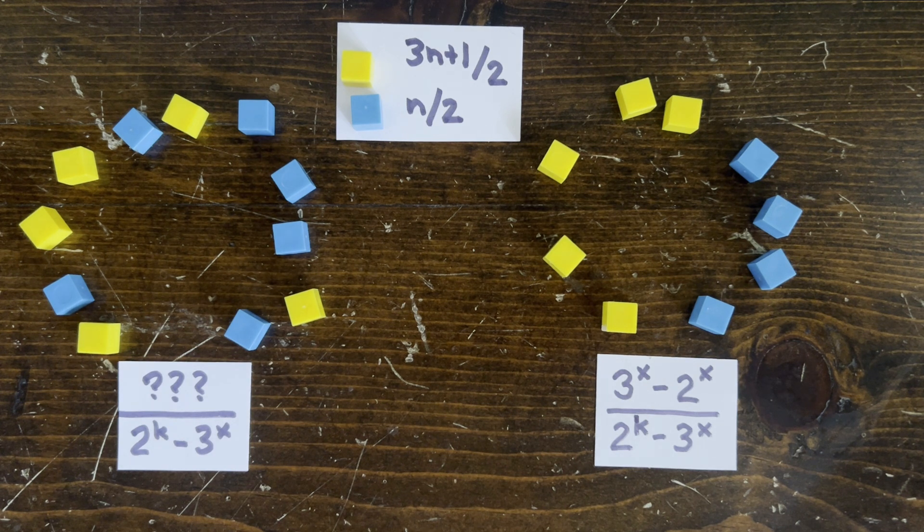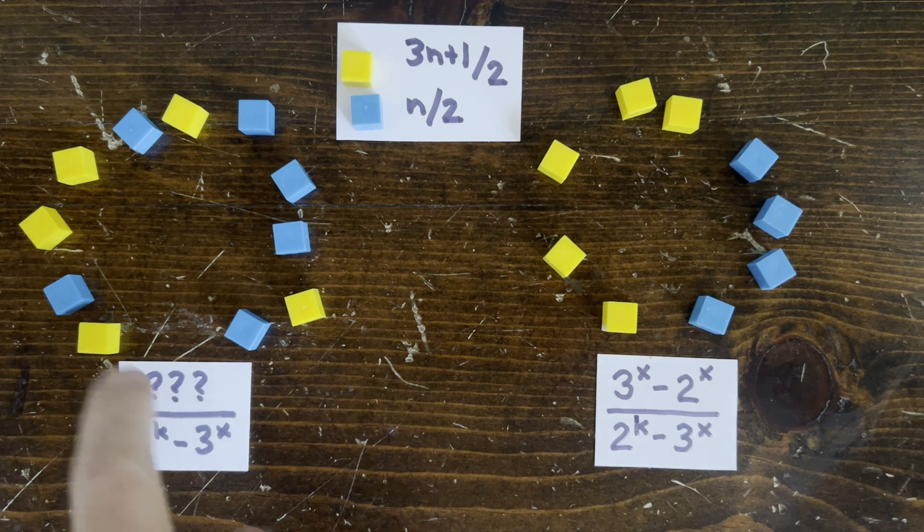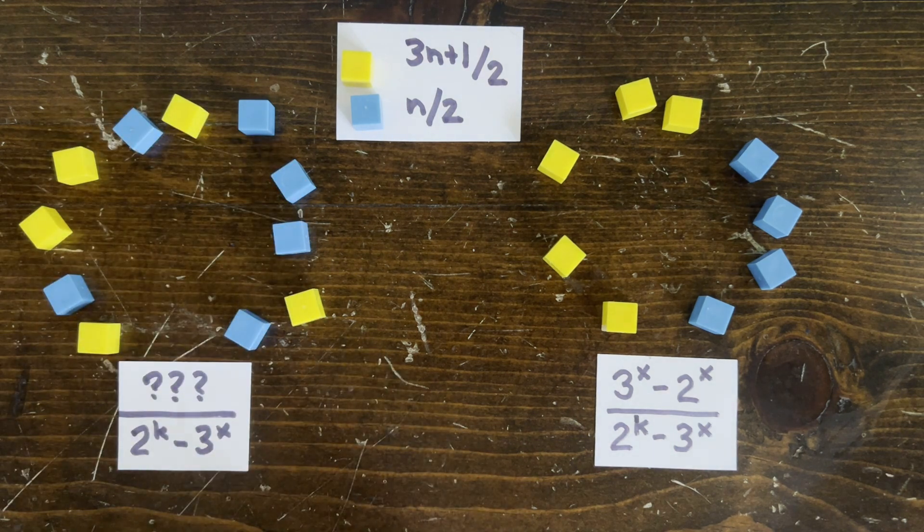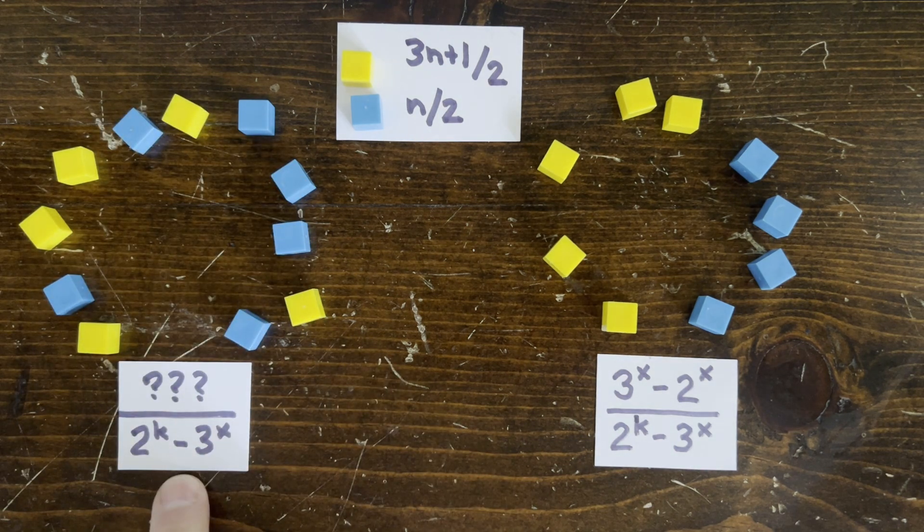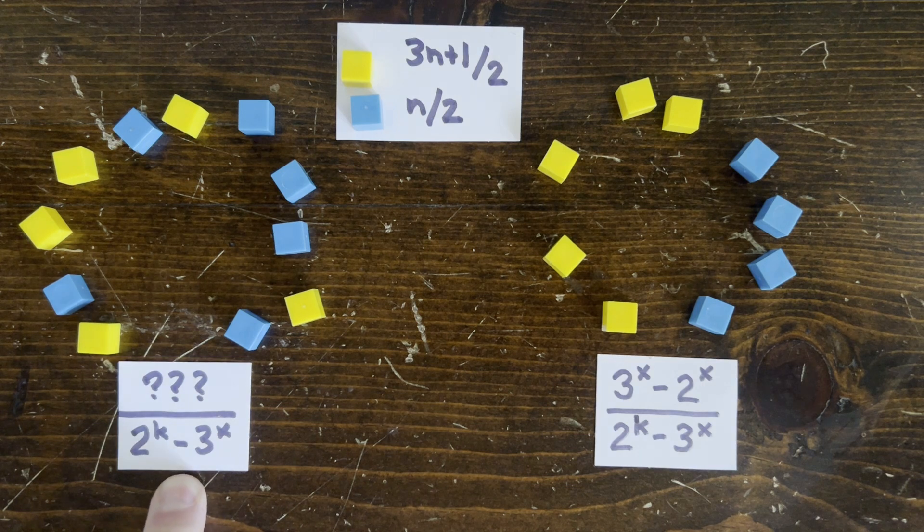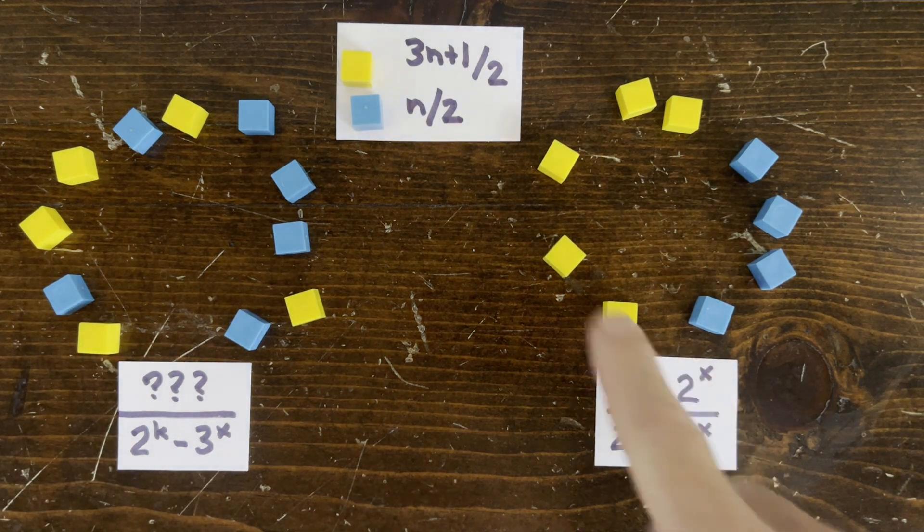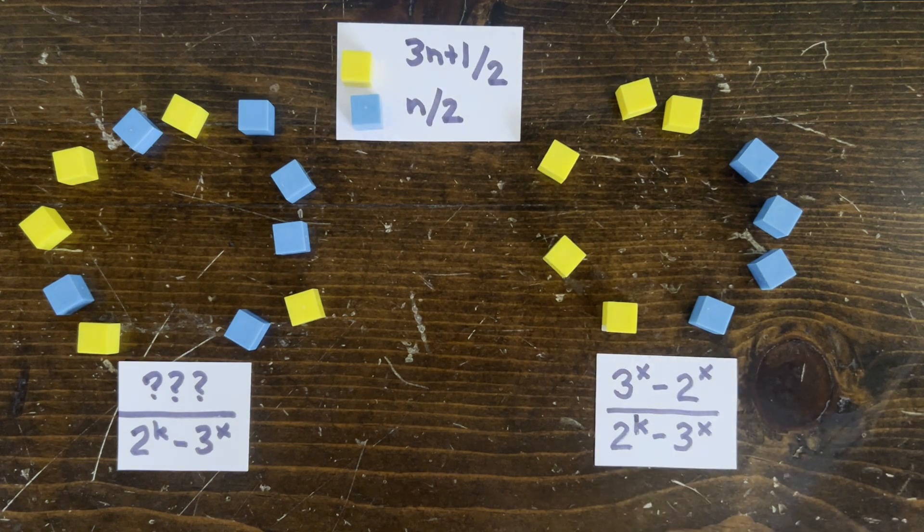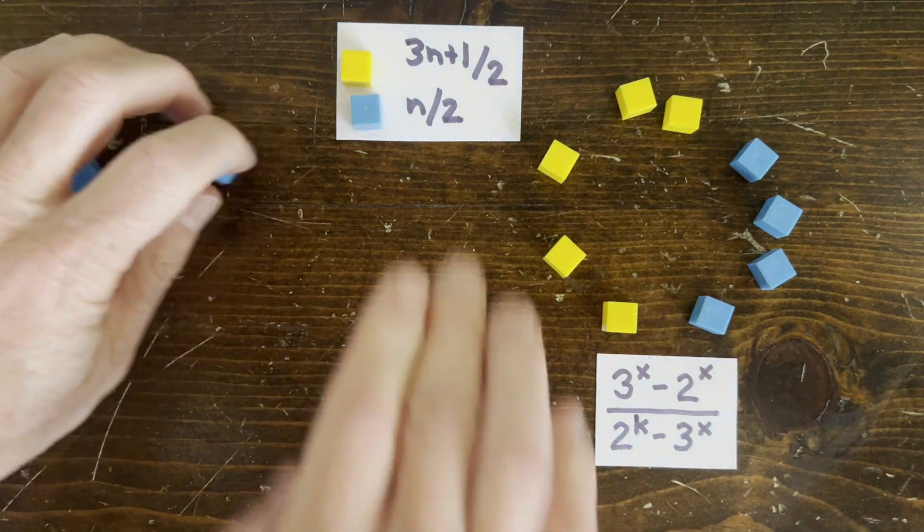Hello, welcome back. Any 3n plus 1 cycle of length k with x up moves is going to have a bottom member that's something over 2 to the k minus 3 to the x. And the bottom of a circuit is always 3 to the x minus 2 to the x over that same thing.